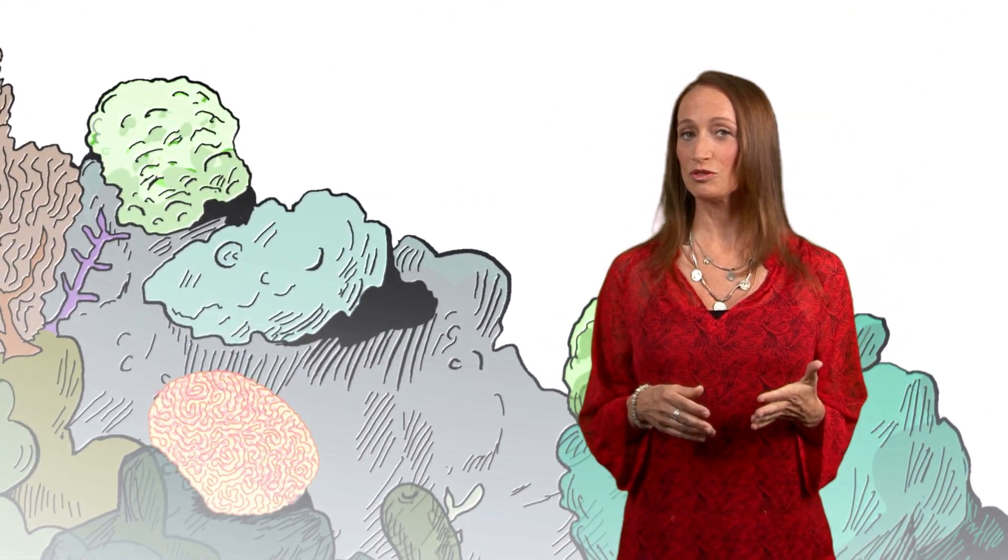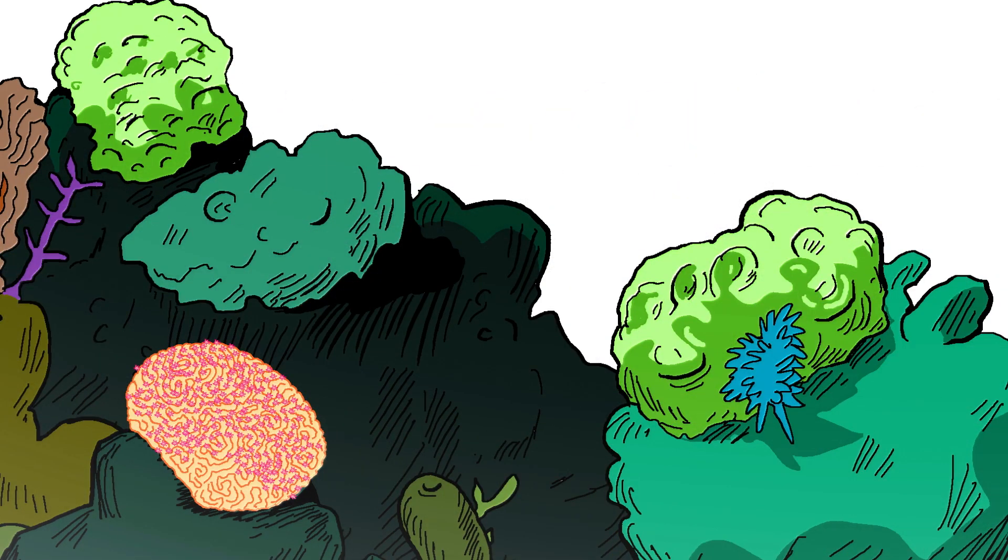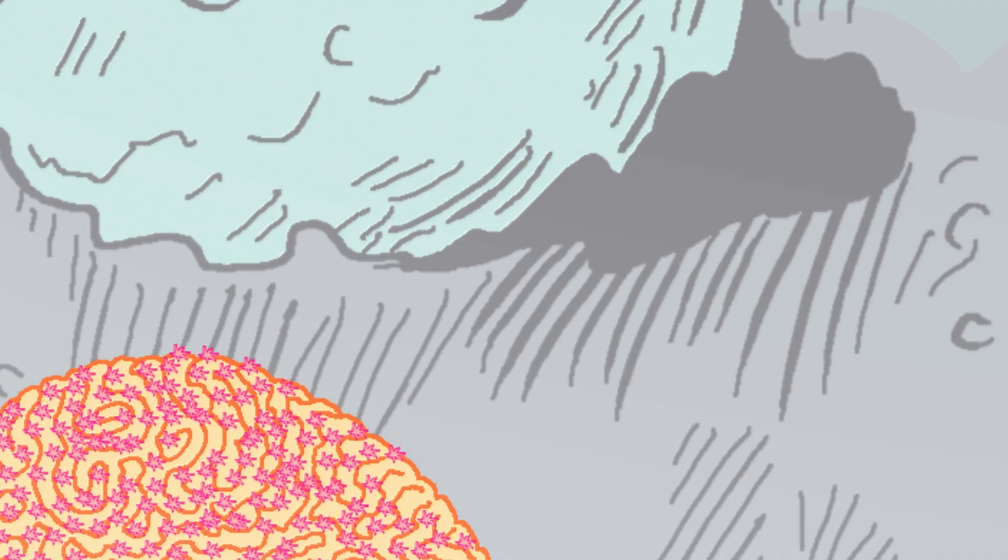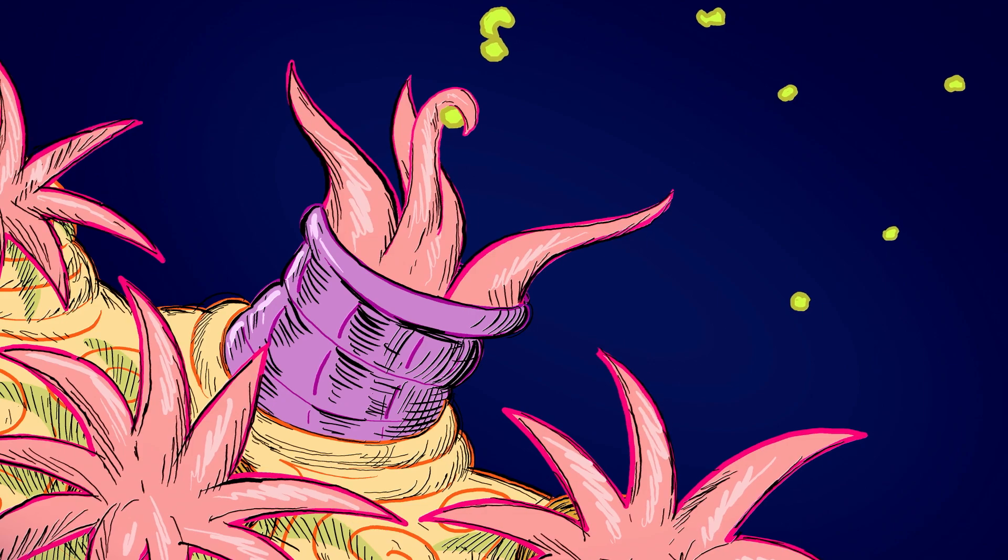Corals are, in a sense, animal, mineral, and vegetable. Corals may look like rocks, but they're actually little animals called polyps, which live in colonies. They filter feed at night and form their rock-like structures by secreting limestone.